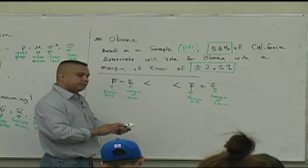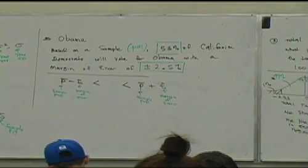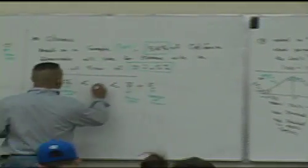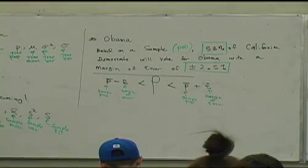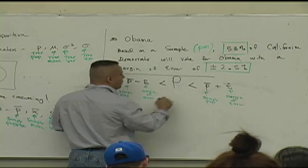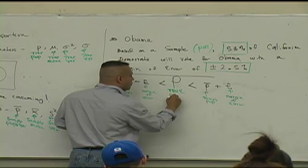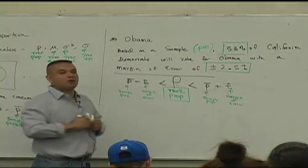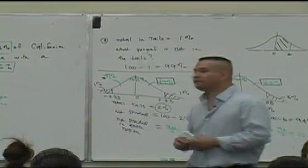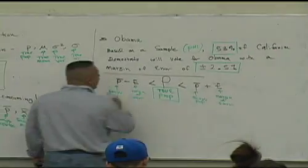What in the world is that something? What would be between those two values? This thing. What in the world is that? This is the true proportion. So what they're saying is that the true proportion of voters for Obama is somewhere between 53 plus 2.5 and 53 minus 2.5.